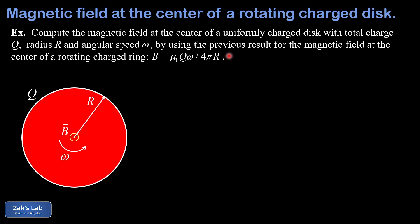So there's the previous result we're given for the rotating charged ring. The magnetic field turned out to be mu naught Q omega over 4 pi r. And I'll post a link to the video where that result was derived.